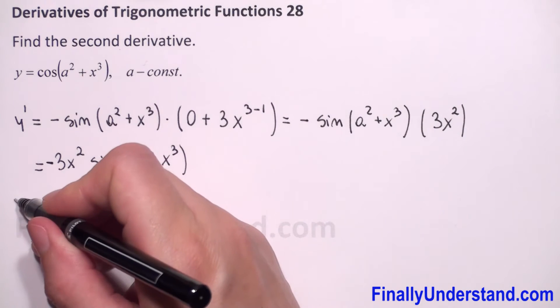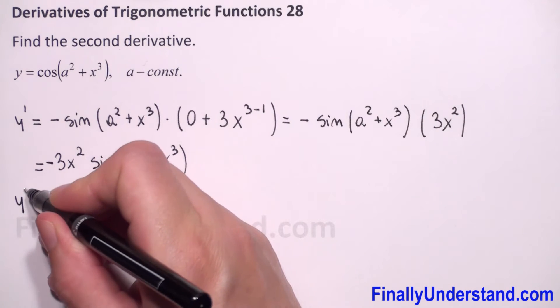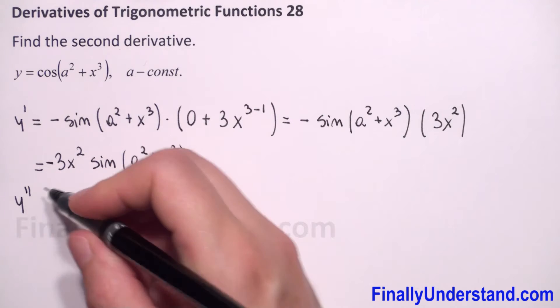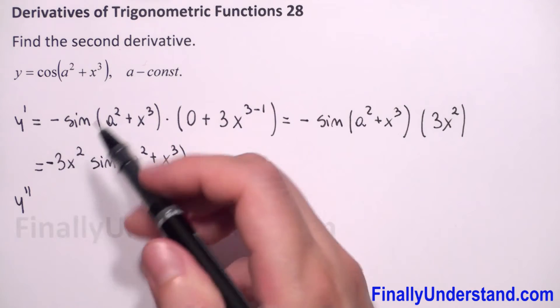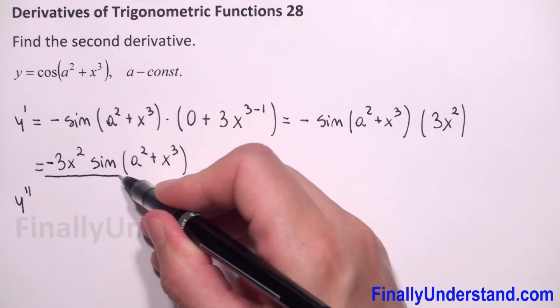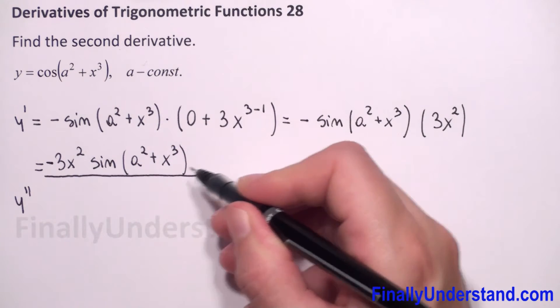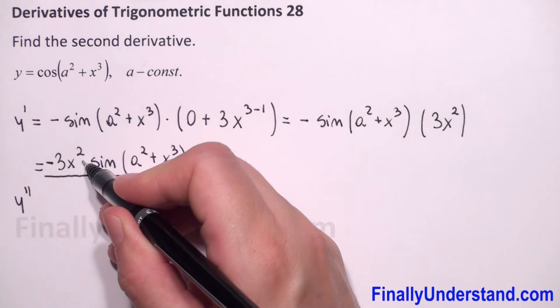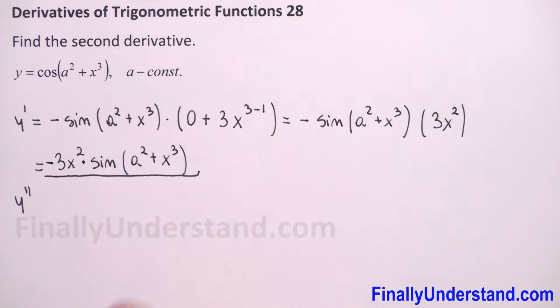Now we have to find the second derivative, which means we have to find the derivative of our first derivative. We have a multiplication here, so we have to use the product rule.